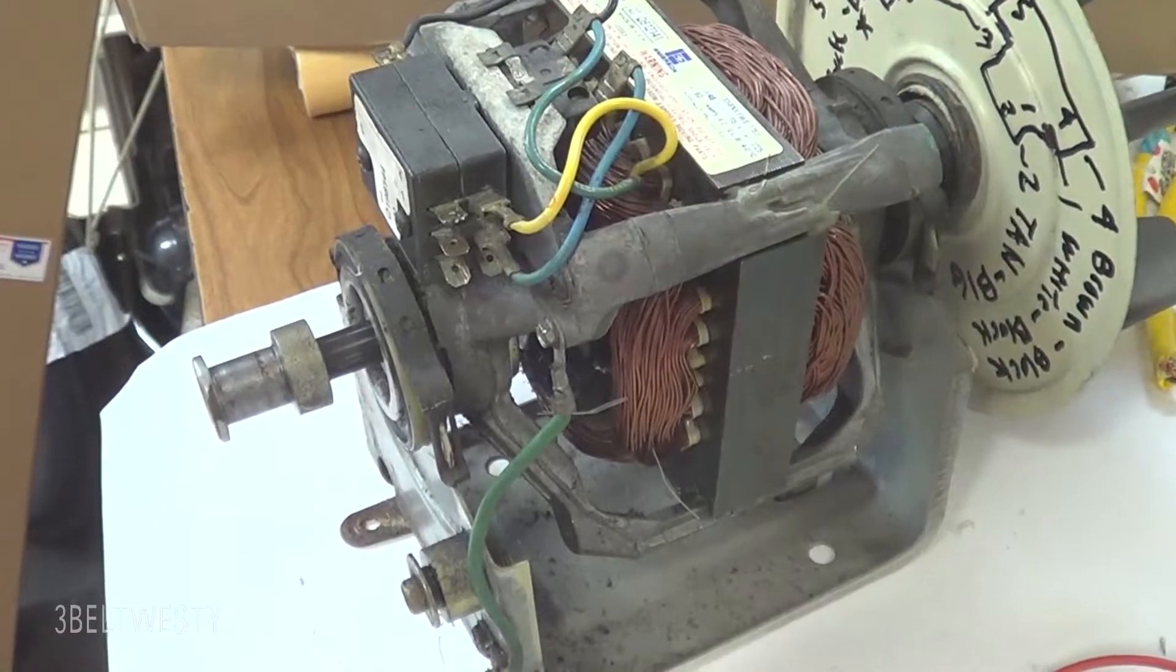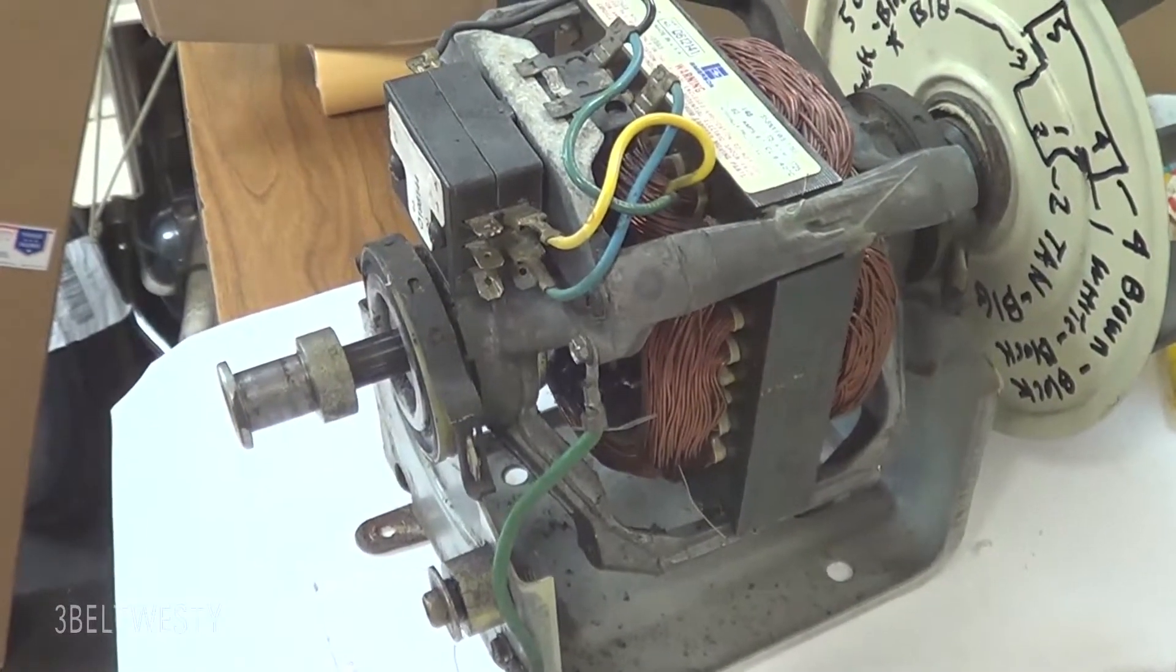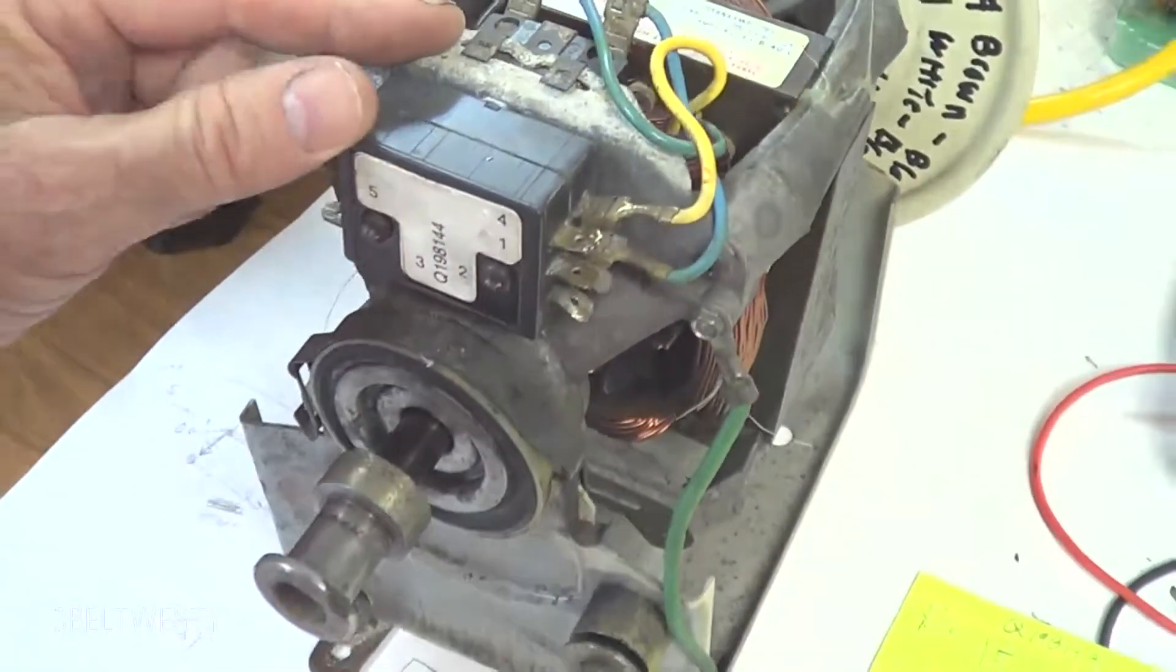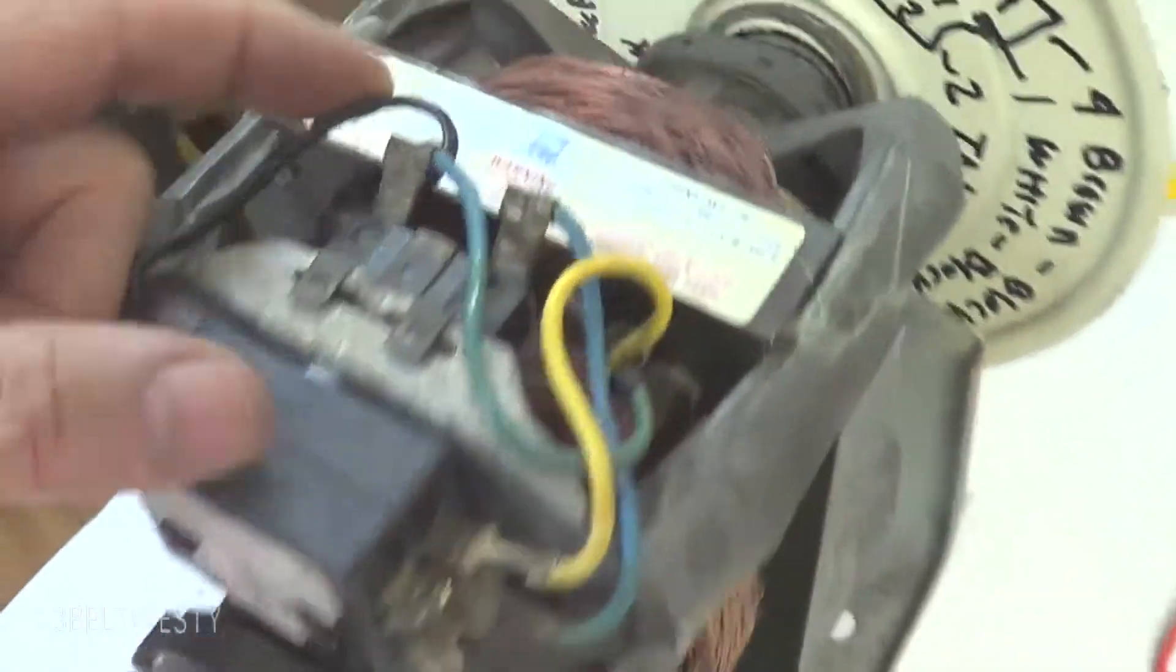This is the dryer motor I pulled out this morning. It's a 1976, roughly 77, White Westinghouse. It's a Q612-141.